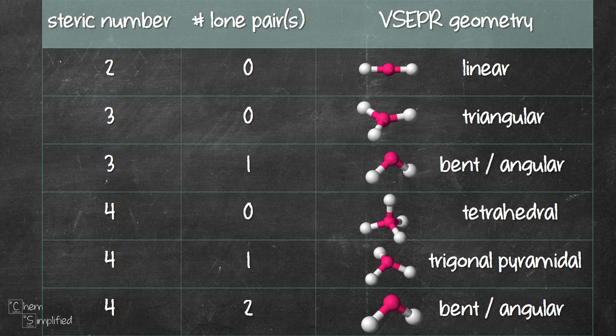Keep in mind that when counting the steric number and lone pairs, focus only on the groups and the lone pairs connected to the central atom. Don't get confused with the lone pairs on the terminal atoms. Terminal atoms are the atoms connected to the central atom.